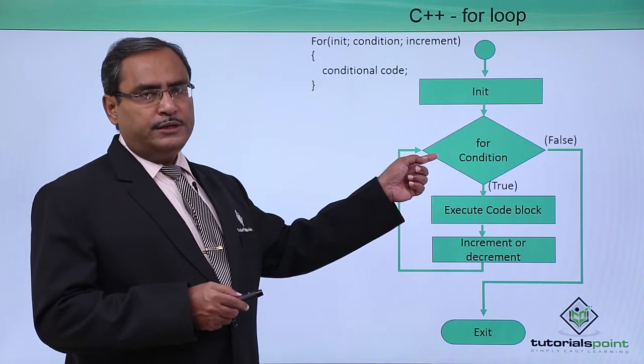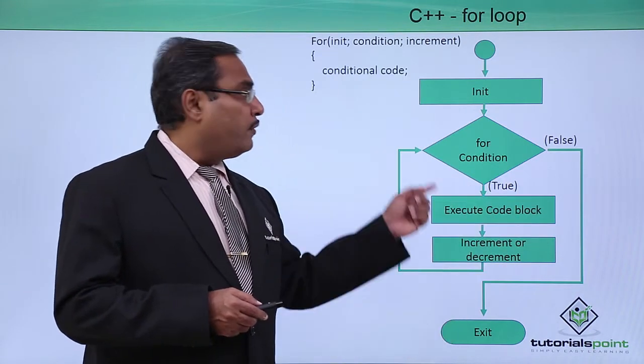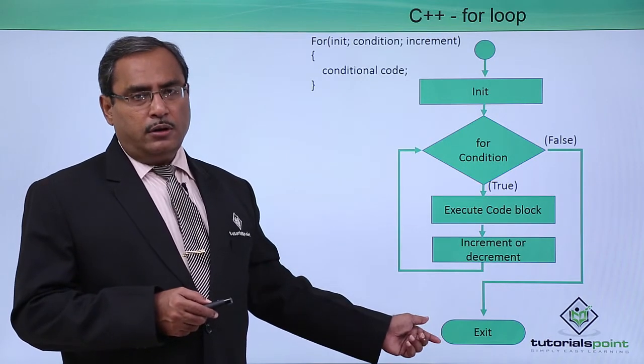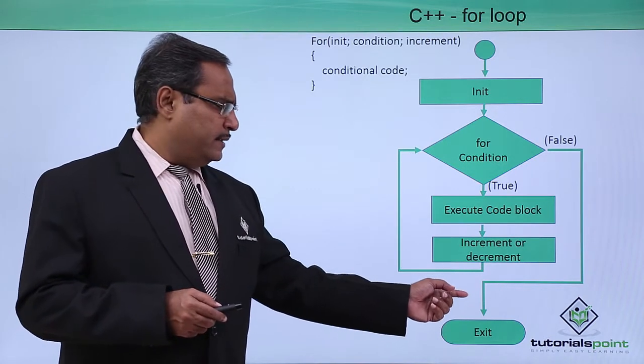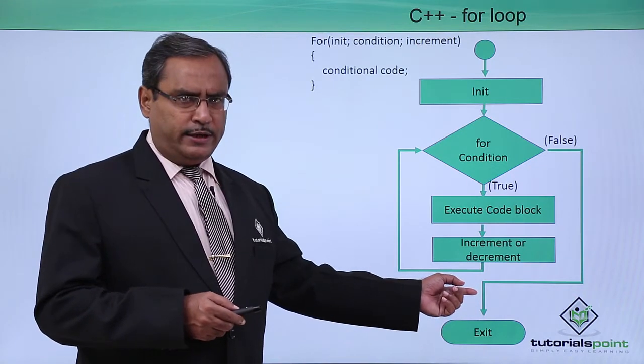Then again the condition will be checked. If the condition is false, then the control will come out from this for loop and it will go for the next body, whatever is there in the C++ code, that will be executed next.